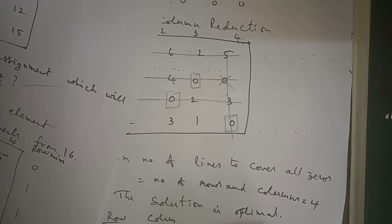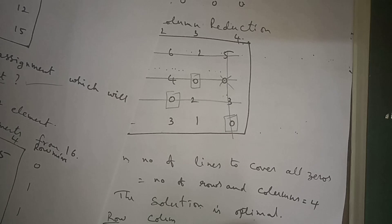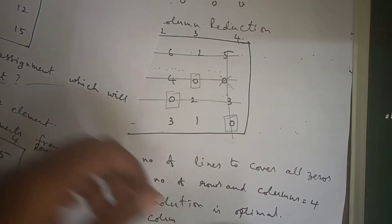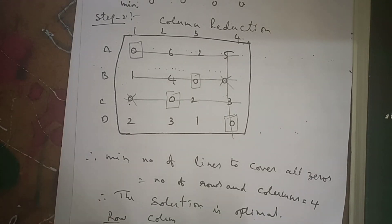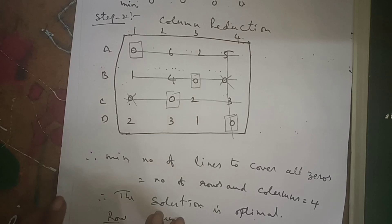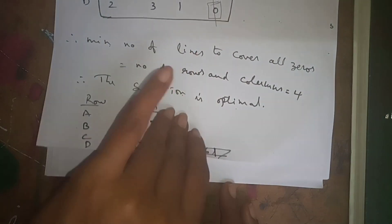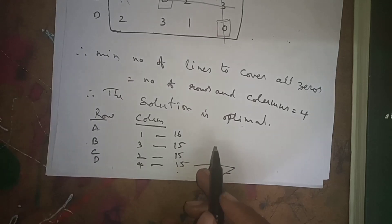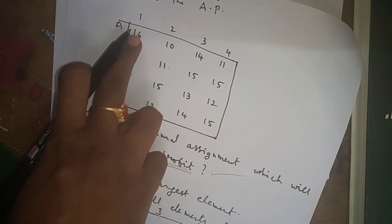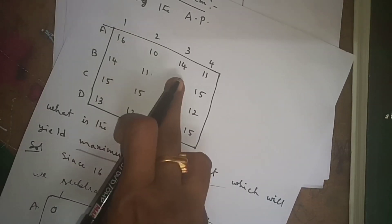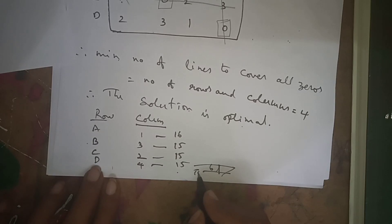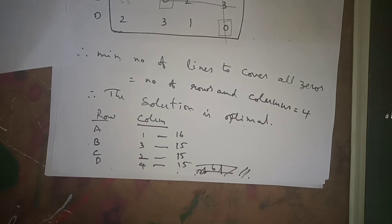Now we find the total maximum profit from the original given problem. A in the first column gives 16, B in the third column gives 15, C in the second column gives 15, D in the fourth column gives 15. Adding all these values: 16 plus 15 plus 15 plus 15 equals the maximum total value of 61.